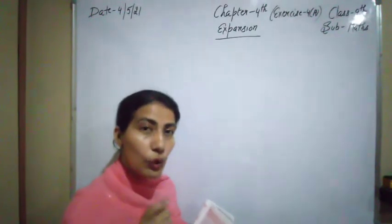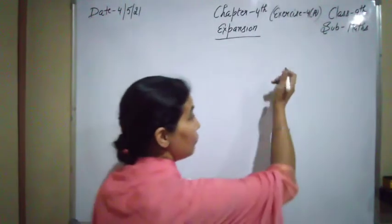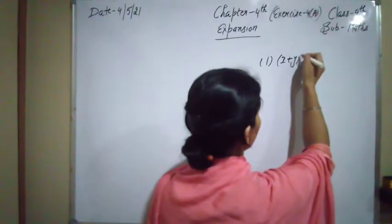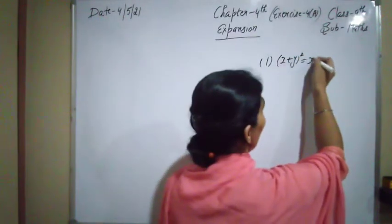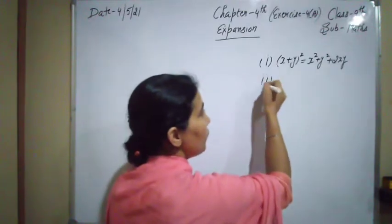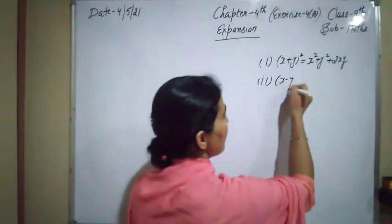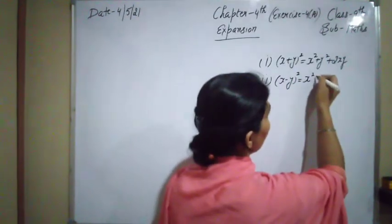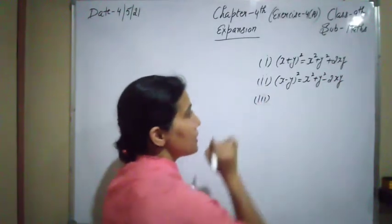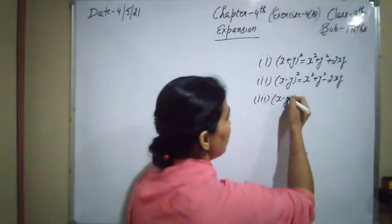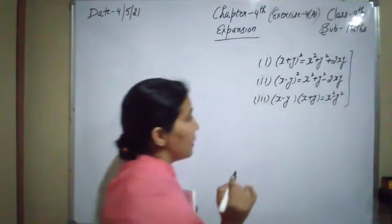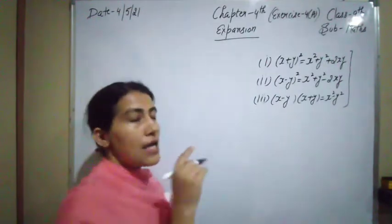Before starting the first worksheet, I'm going to write down the formulas that are going to be used. The first formula is (x + y)² = x² + y² + 2xy. The second one is (x − y)² = x² + y² − 2xy. The third one is (x − y)(x + y) = x² − y². These three formulas will be used in this worksheet.